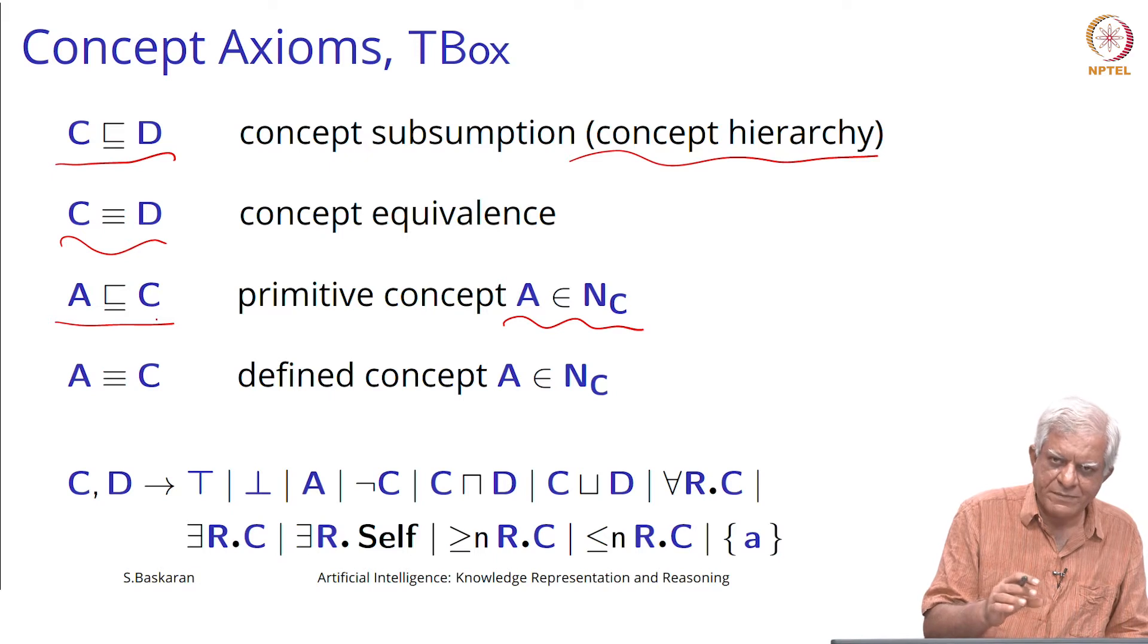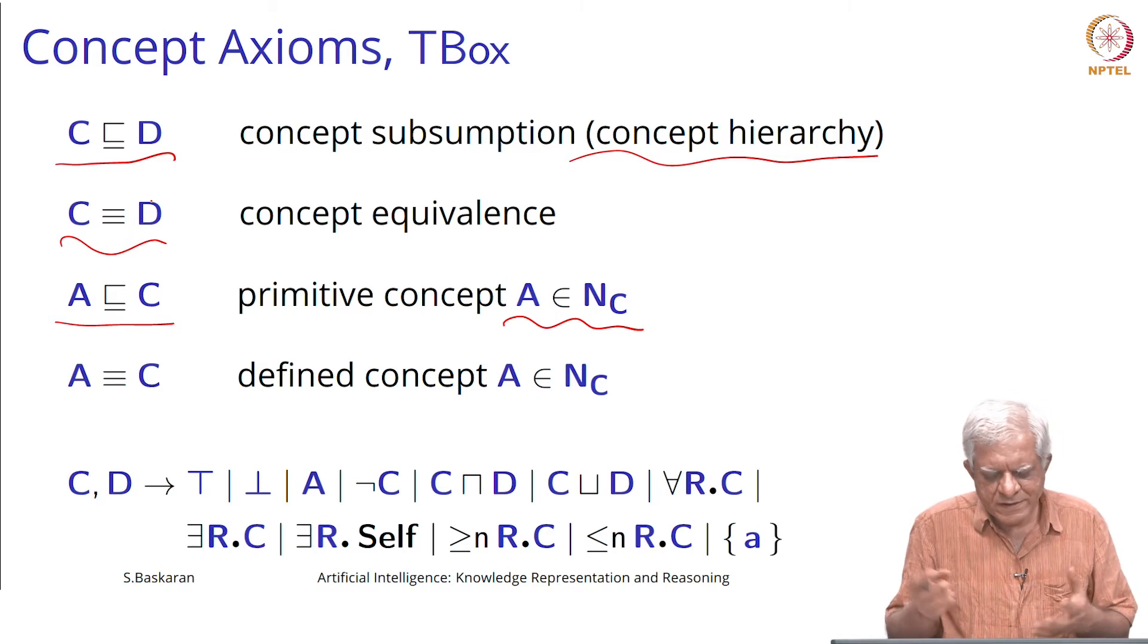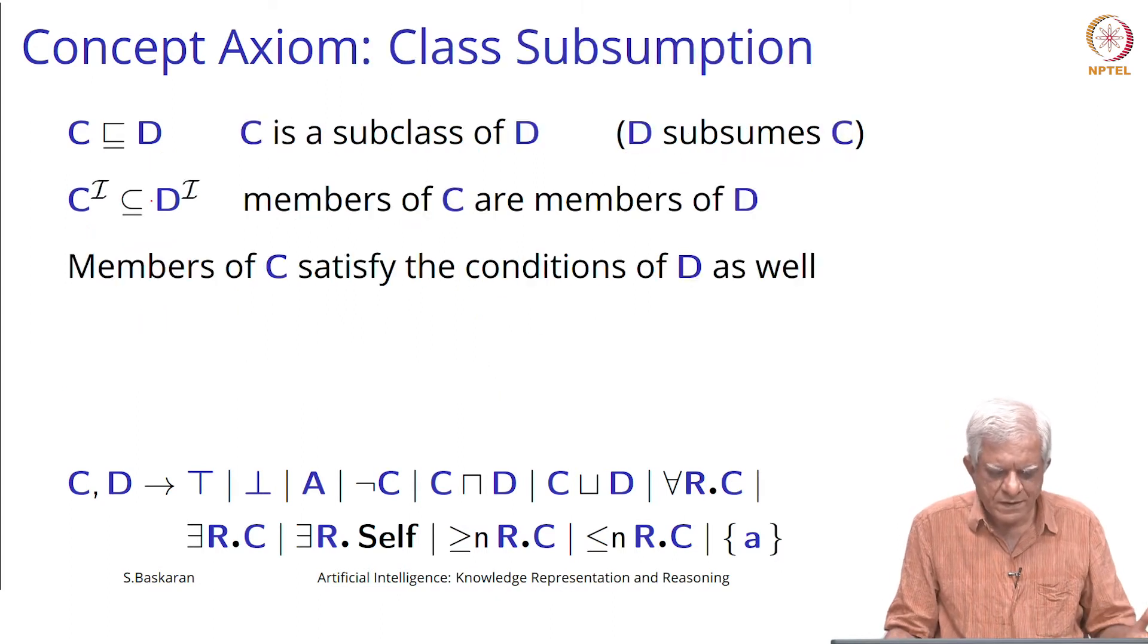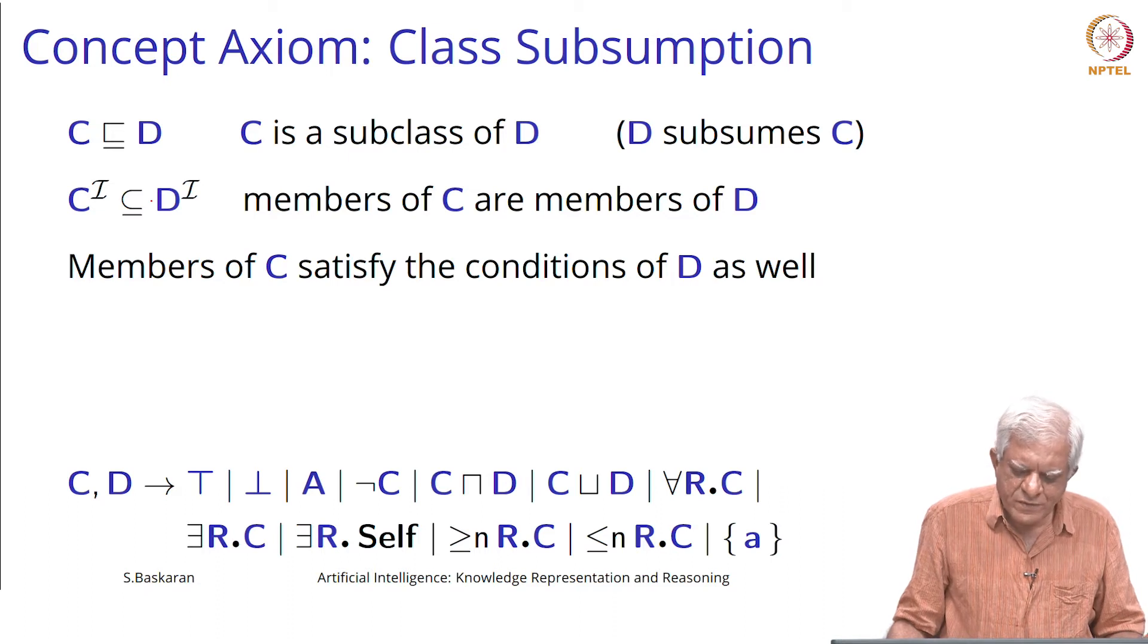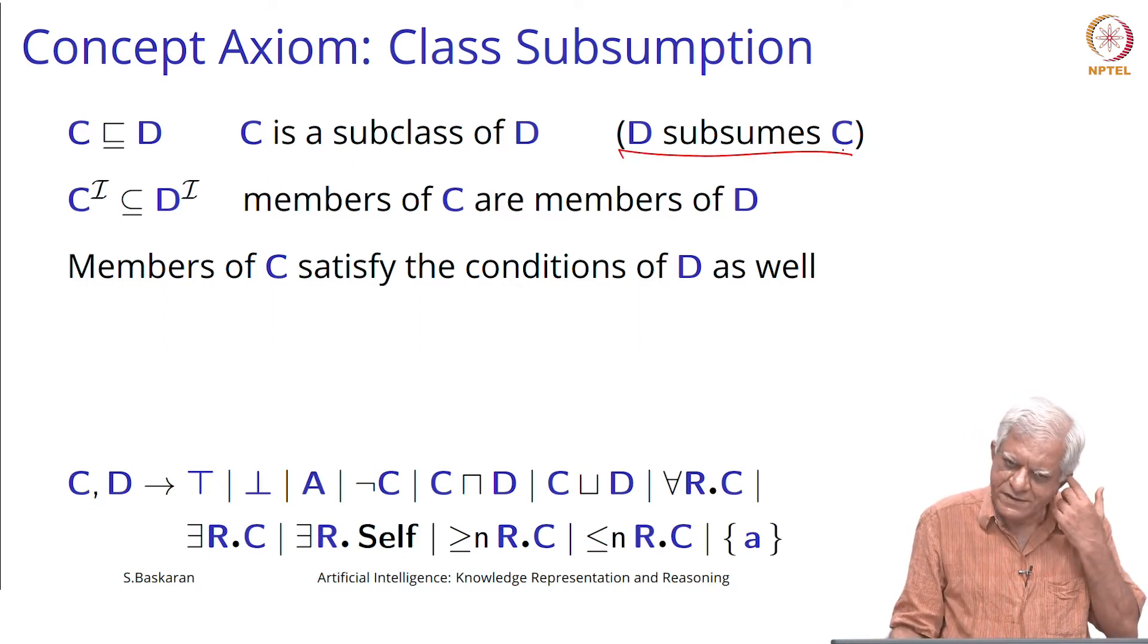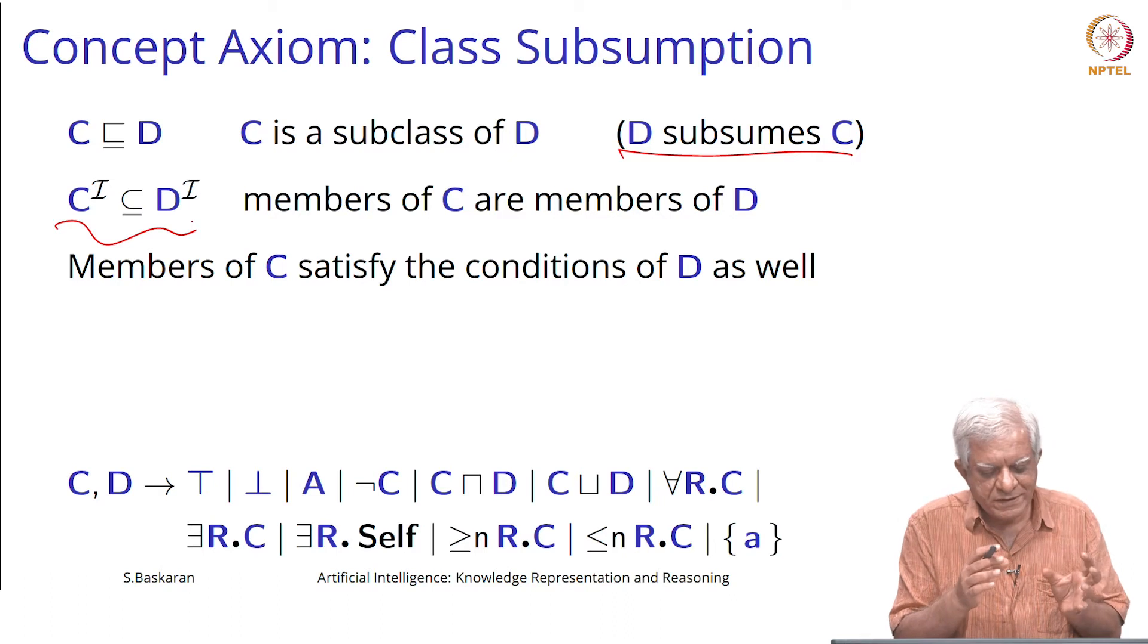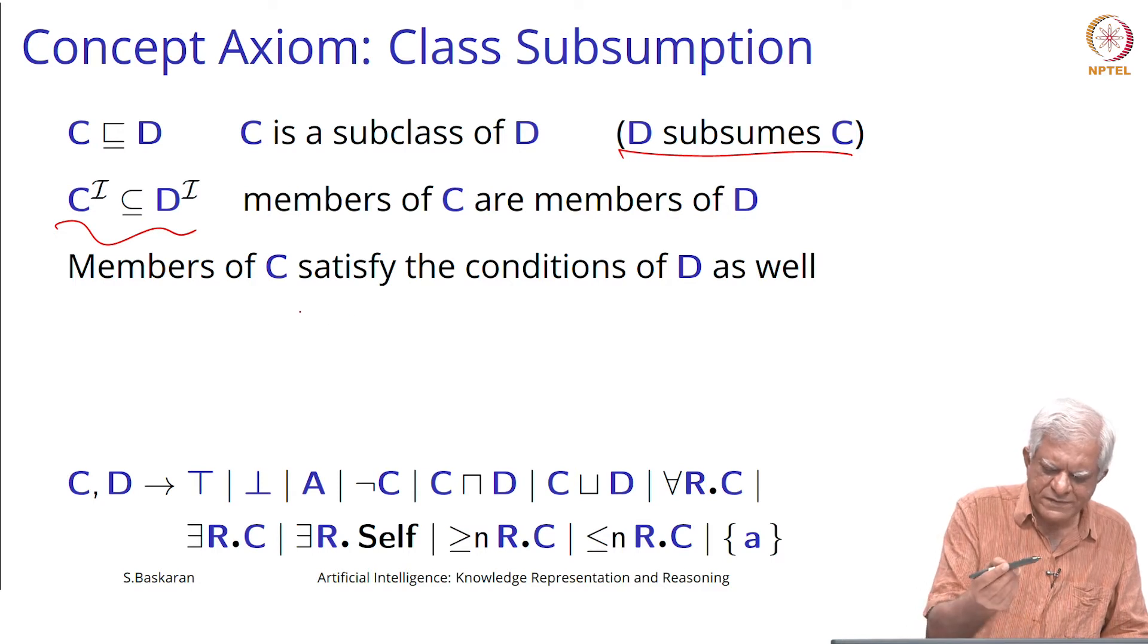Remember A are named concepts or primitive concepts, and C and D are something which can be constructed from simpler. So the most important one is C is a subclass of D or as we have said here, D subsumes C. In terms of interpretation, it means that the set which represents the concept C is a sub-concept of D.